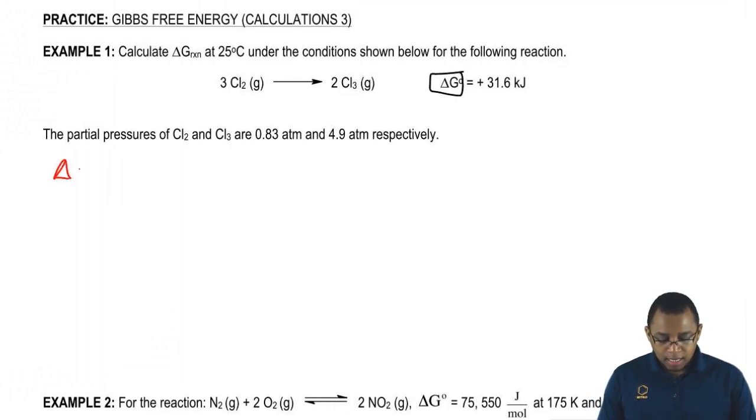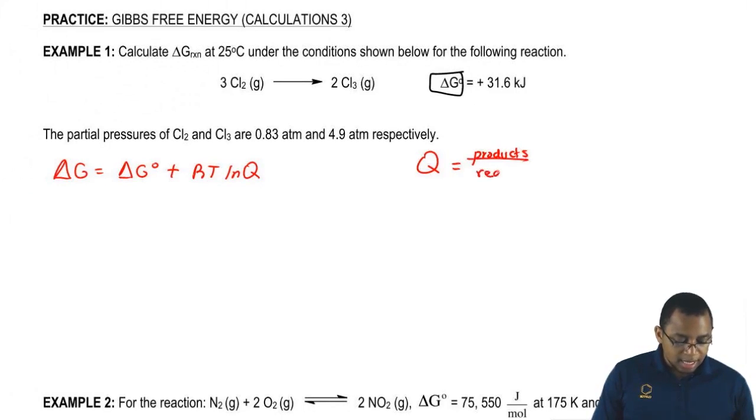We know we're dealing with non-standard conditions here, so it's going to be delta G equals delta G zero plus RT ln Q. What you need to remember is that Q is our reaction quotient and it equals products over reactants. It ignores solids and liquids. Luckily, neither one of these compounds is a solid or a liquid, so we're going to look at both of them.